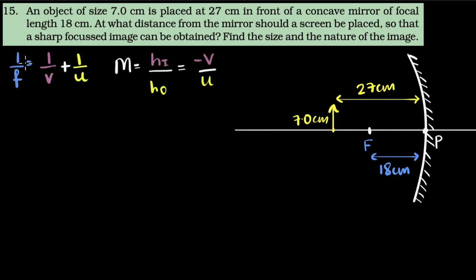Here it is. Mirror formula is 1 over f, the focal length, equals 1 over the image distance plus 1 over the object distance. This formula works for any mirrors, for all cases. Magnification is defined as height of the image divided by the height of the object, and for mirrors this equals minus v divided by u — minus of image distance divided by the object distance.